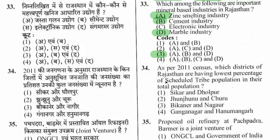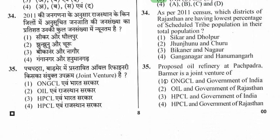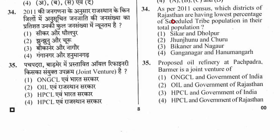Question 34: As per 2011 census, which districts of Rajasthan have the lowest percentage of Scheduled Tribe population in their total population? Options include Sikar and Dholpur, Jhunjhunu and Churu, Bikaner and Nagaur, and Ganganagar and Hanumangarh. The right option is Bikaner and Nagaur.